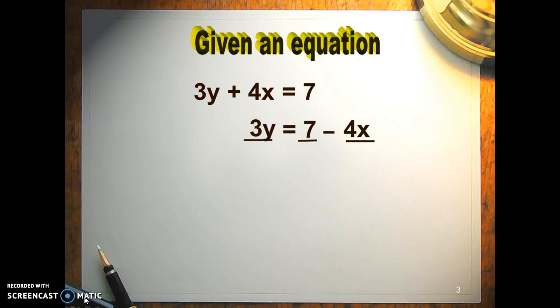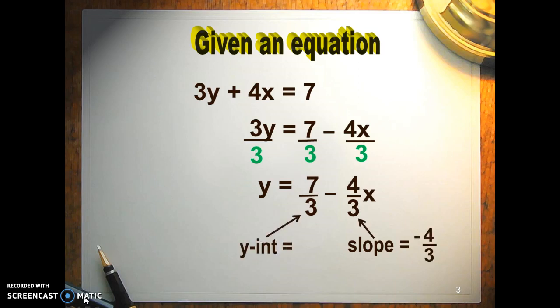You have to isolate the y completely by dividing through by the coefficient. And then the slope is the coefficient of x, and the y-intercept, which comes out of this, is just the constant term. We want to leave them in fraction form if it doesn't work out evenly.